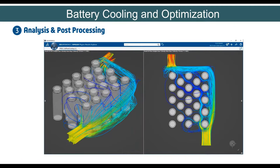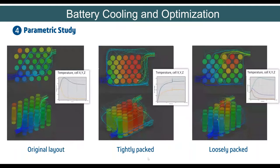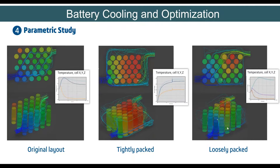This animation shows how air flows around the cells, how heat is carried away, the temperature buildup, the maximum temperature, and the temperature profile. You can then work with different configurations. For parametric studies, you can compare the original layout, a tightly packed layout, and a loosely packed layout. A tightly packed layout shows higher temperature buildup due to less flow area. You want an optimized layout — not too packed and not too loose since space is limited — and virtual simulation lets you compare performance to find the right configuration.